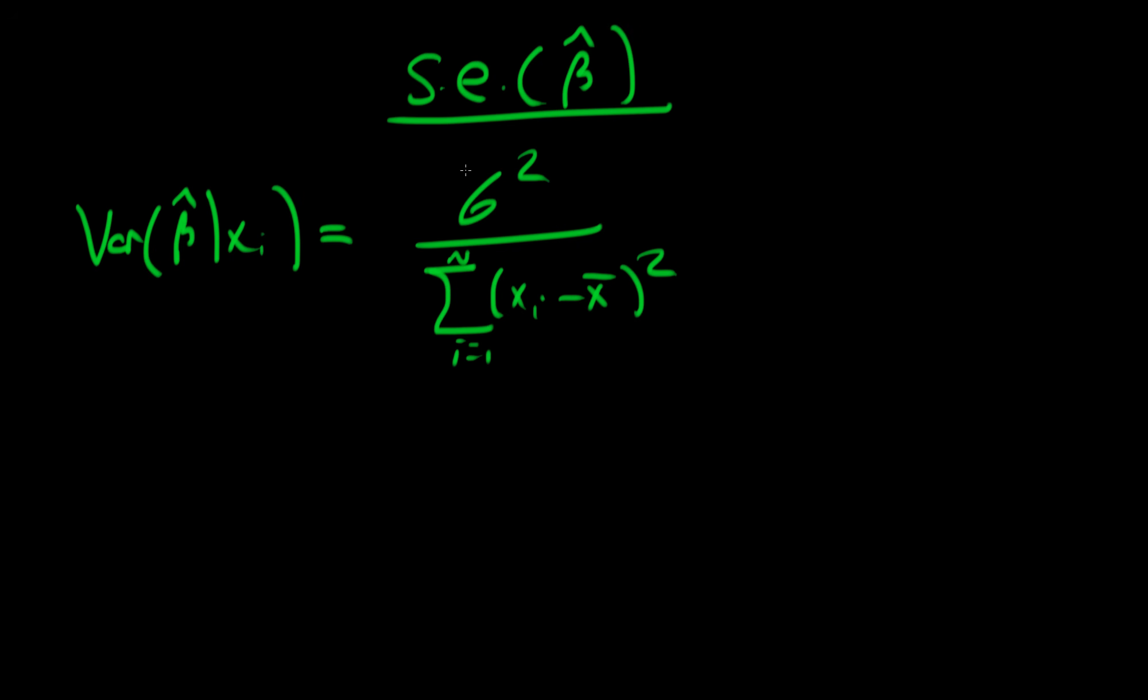We don't have sigma squared, so we have to estimate that. As a result, we don't have the exact variance of beta hat.